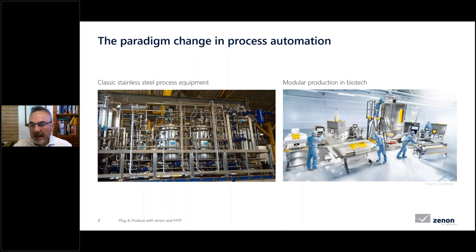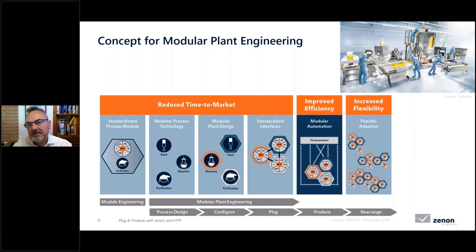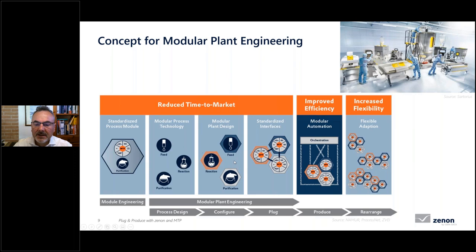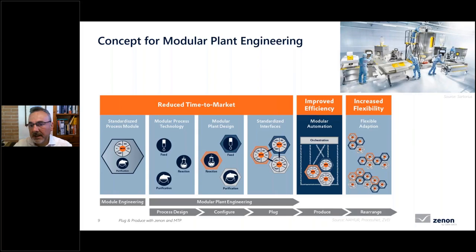In modular plant engineering, every standardized process module — like a filter, bioreactor, or doser system — has a common behavior and common interfacing from both mechanical and digital points of view. On top of these modules sits an orchestration layer that can detect which modules are present, read information coming from the modules, and command every module it has. We call this exactly orchestration.